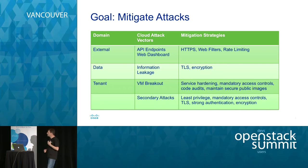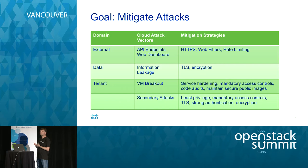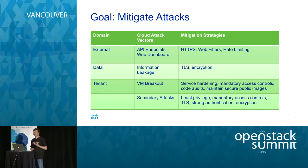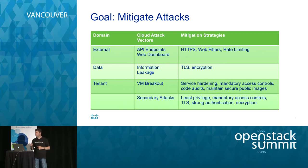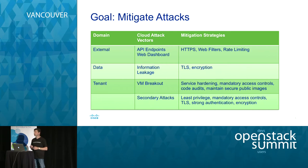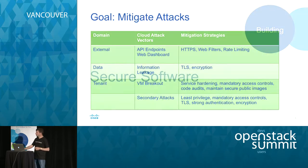In the tenant domain, especially in a public cloud where you don't personally know the tenants, you've got to protect that tenants stay within their assigned area. We can use techniques like service hardening, mandatory access controls, and providing the code they run inside that domain. When we talk about defense in depth — secondary attacks — if somebody breaches out of their box, deploying techniques like least privilege, mandatory access controls, and encryption everywhere will minimize the breach.